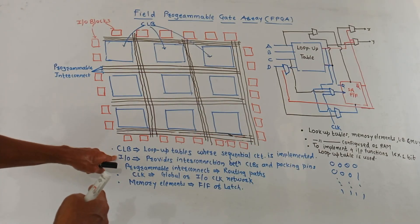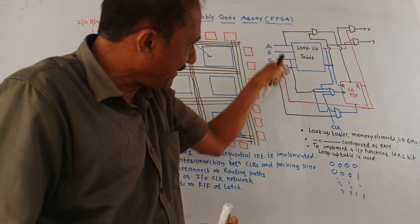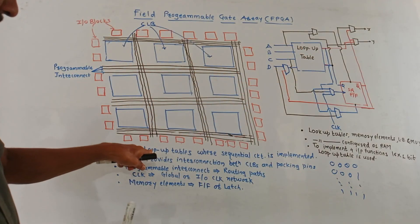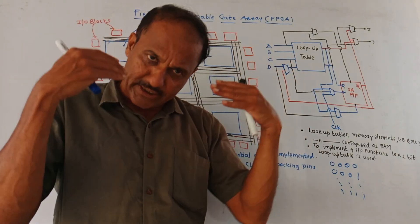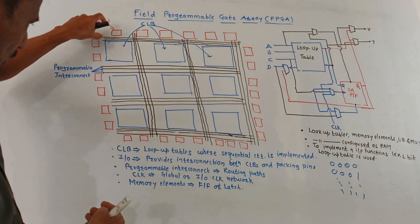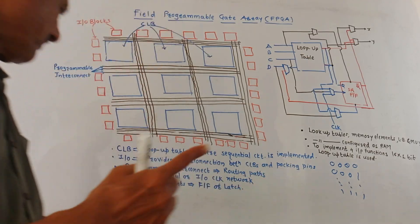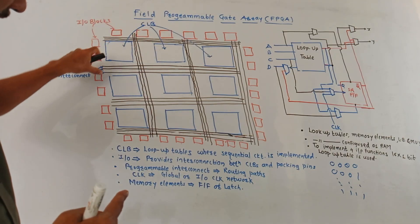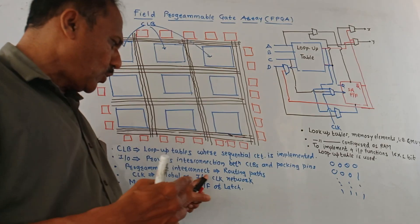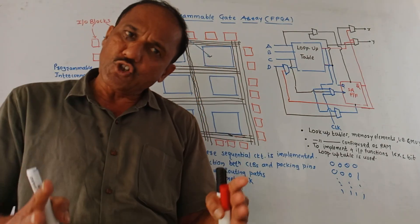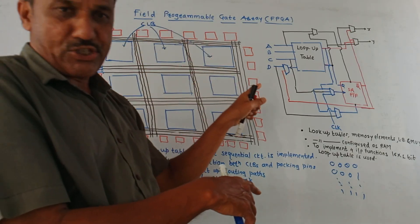I have written a summary of each block. CLB, that is Configuration Logic Blocks, consists of Lookup Tables. Lookup Tables are Truth Tables. It consists of a Lookup Table where the required sequential circuit is implemented — we can implement the required sequential circuit by writing a Truth Table or Lookup Table. Input-Output Blocks provide interconnection between CLBs and the Packaging Pins. Programmable Interconnections — the horizontal and vertical lines — are called Routing Paths. It also contains Clock Signals, which can be a Global or Input-Output Clock Network, and it consists of a Memory Element. Flip-Flops or Latches are used to store the data. These are the major blocks of the Architecture of FPGA.